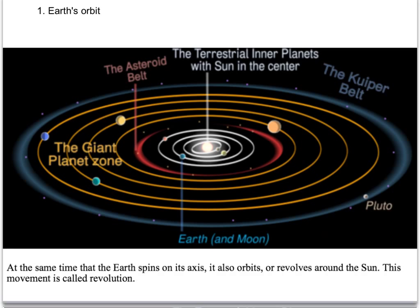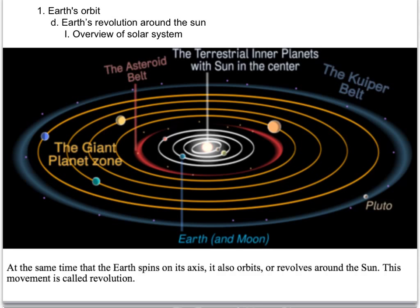The Earth rotates on a daily basis and also revolves around the Sun. The solar system starts with the Sun at the center — that's most of the mass. Then you have the inner terrestrial planets: Mercury, Venus, Earth (which has a moon), and Mars. Outside of that is the asteroid belt, separating the inner planets from the four gas giants: Jupiter, Saturn, Uranus, and Neptune. Pluto is not a planet anymore. Beyond that is the Kuiper belt — rhymes with Viper — containing dwarf planets like Pluto and other objects.